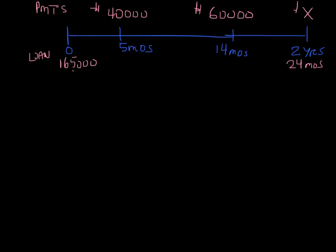Now, if there was no interest whatsoever, we've made a total of $40,000 plus $60,000 — a total of $100,000 in payments against a loan of $165,000. That makes a difference of $65,000. So we know that the final payment of X dollars at 2 years is definitely going to be above $65,000 assuming a zero interest rate. But the interest rate is higher than 0%, so the payment will be greater than $65,000.